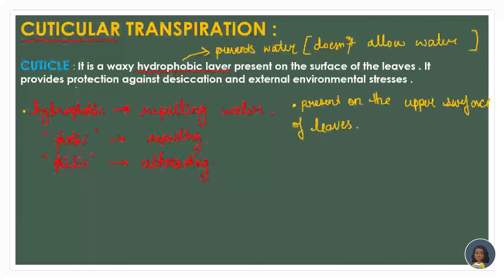The cuticle provides protection against desiccation. Desiccation means loss of water. So it prevents loss of water. The cuticle is waxy and hydrophobic in nature, so it will definitely prevent water loss. It is present on the surface of the leaves and provides protection against environmental stresses as well. All you need to know is it is a waxy hydrophobic layer on the surface of the leaves that prevents desiccation.